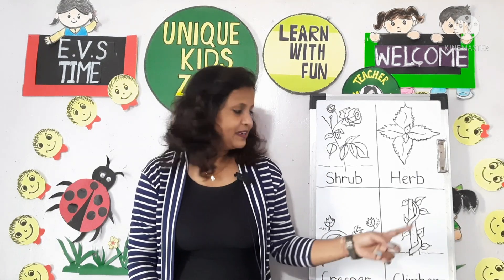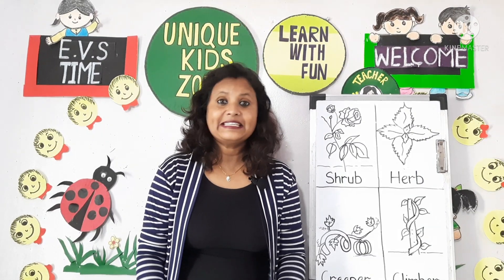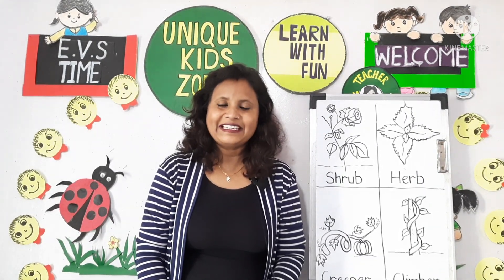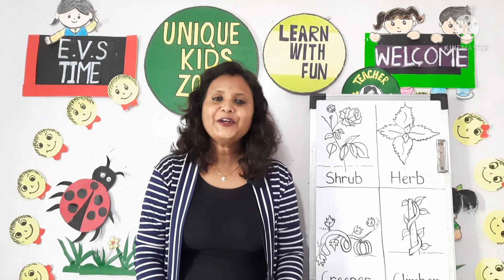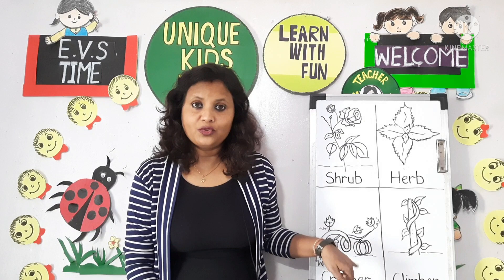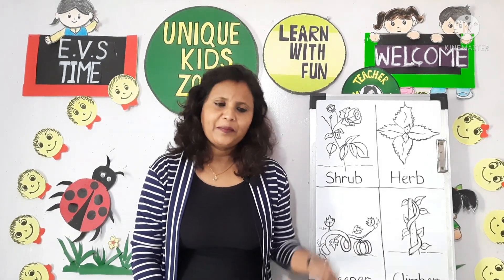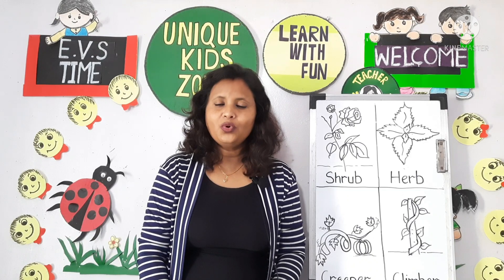After that, climber. Climbers have a very weak stem, and because of that they can't stand on their own — they need support. So they are known as climbers. Like money plant, grapevine, etc. Then, creeper. Creepers grow horizontally on the land. They also have flowers and fruit, but they grow on their own without any support — they spread horizontally on the ground.